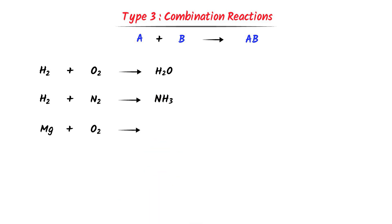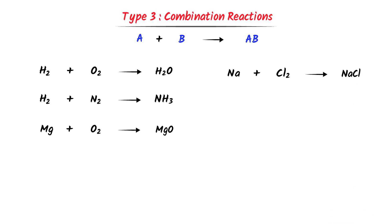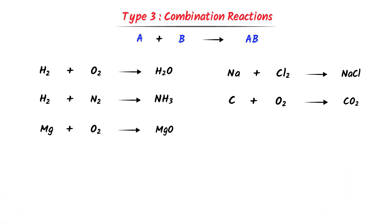Thirdly, magnesium plus oxygen gas combine together to form magnesium oxide. Similarly, any element like sodium, calcium, or potassium will combine with oxygen to form sodium oxide, potassium oxide, or calcium oxide. Fourthly, sodium plus chlorine gas combine together to form sodium chloride. Fifthly, carbon plus oxygen combine together to form carbon dioxide gas. Sixthly, magnesium oxide plus carbon dioxide gas combine together to form magnesium carbonate.